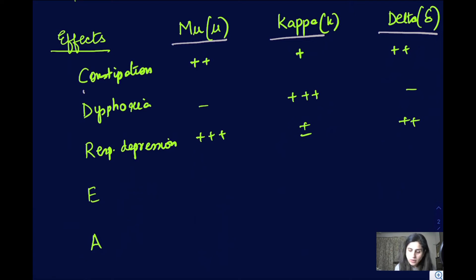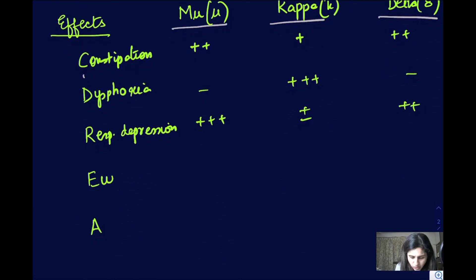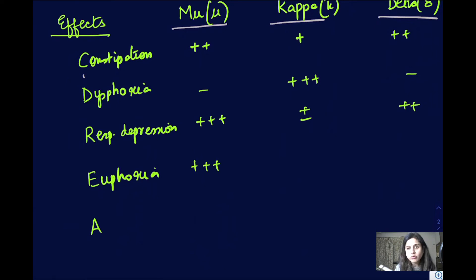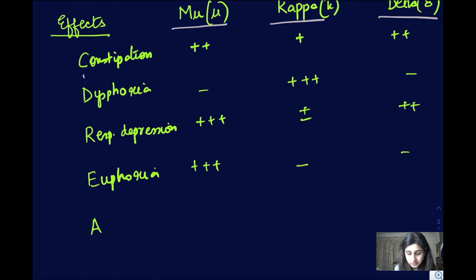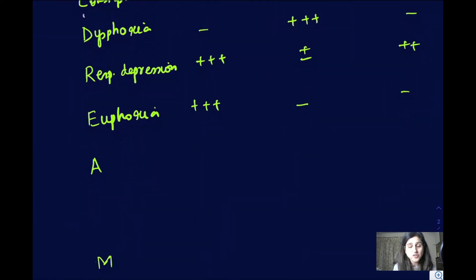E stands for euphoria. In some patients, opioids can cause euphoria, and this is exclusively because of the mu receptor. Remember: mu — euphoria, 'muphoria.' Euphoria is because of mu and not because of anything else.